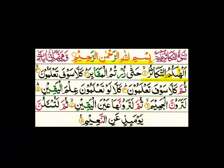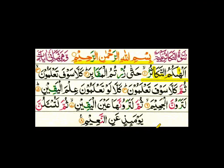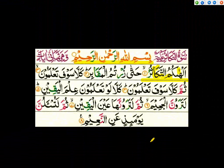Alhakumut takasur. If we have alif and there is no movement on alif, we check the letter before it. If the previous letter has fatha on it, then alif will be alif madda. Whenever alif madda appears, we need to prolong it equal to one alif. We can say alif madda and standing fatha are equal.